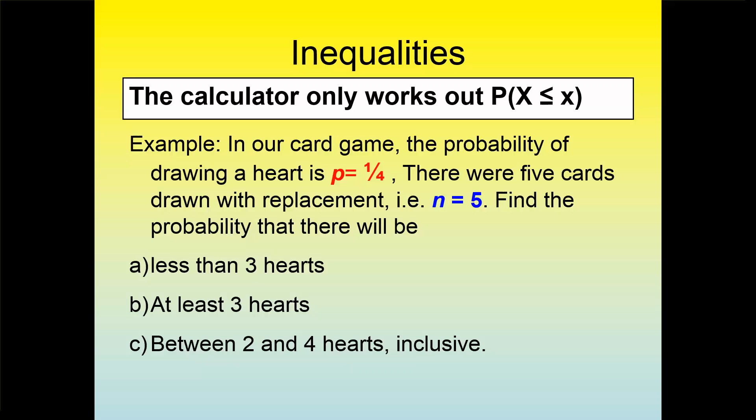A quarter of the playing cards have hearts, so the probability of successfully getting a heart each time is 1 in 4, or 0.25. n equals 5 because we're drawing 5 cards, and we want to know the probability for three different questions.